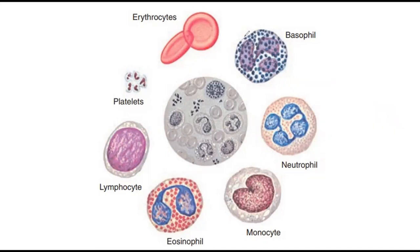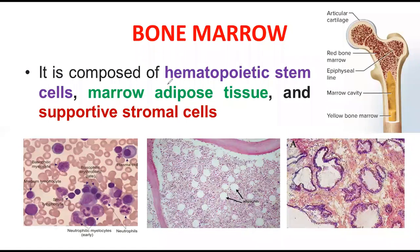Hematopoietic stem cells — 'hema' means blood — can give rise to any white blood cell and red blood cell. The marrow adipose tissues are a combination of cells involved in the active metabolism of glucose and fats. The energy produced by this metabolism is used by the hematopoietic stem cells to divide during mitosis.